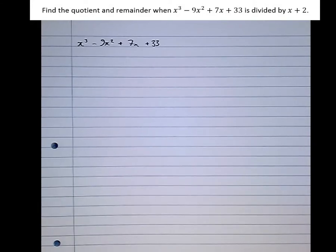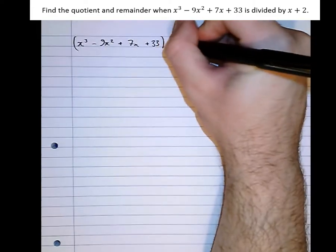And we're going to call this method forced factorisation. So this question is asking us to find the quotient and remainder when x cubed minus 9x squared plus 7x plus 33 is divided by x plus 2.